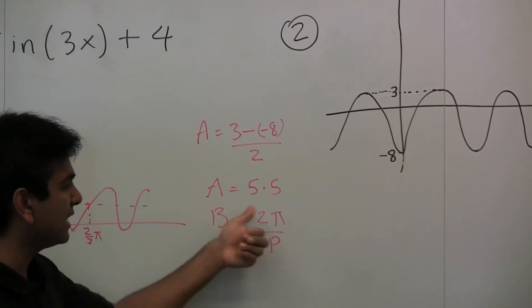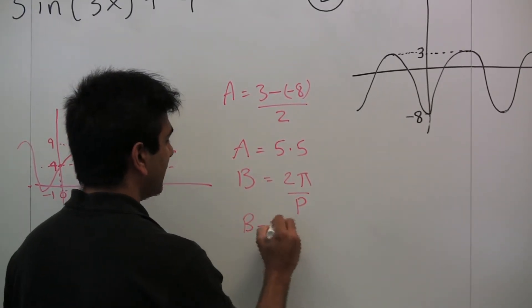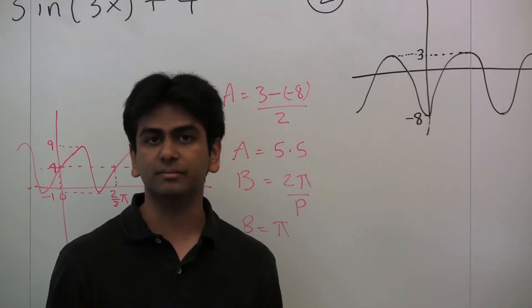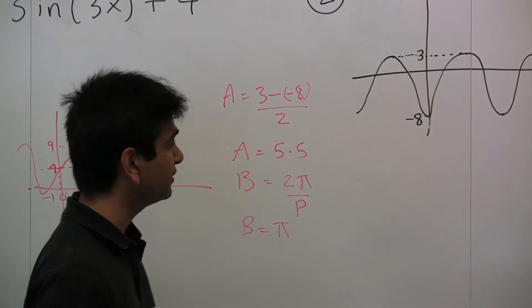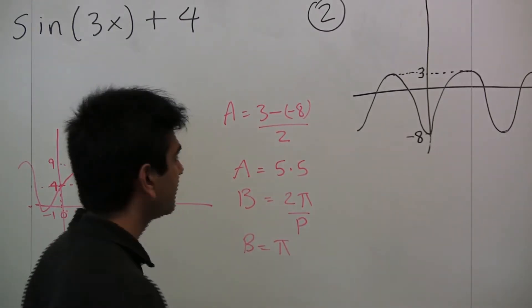Since p is 2, that makes b π because that would be 2π over 2. So we know that b is π, and finally, c is going to be the max plus the min divided by 2. And again, that's the fictitious imaginary central line.